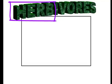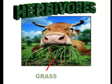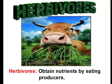The second consumer group are called the herbivores. Herbivores are easy to remember because if you look at the first four letters, they spell out 'herb,' and herbs are vegetables or parts of vegetables we use to spice up our food. Herbivores include organisms such as the cow — we can see the cow munching on grass, which is plant material. So herbivores obtain their nutrients by eating producers and/or plants.